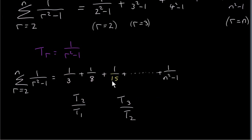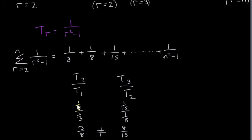To test whether the series is geometric — or rather, to prove it is not — we look at any term divided by the previous term, which gives a common ratio r. This must be the same for every pair of consecutive terms. Taking t2 divided by t1 gives (1/8) divided by (1/3), which is 3/8. Then t3 divided by t2 gives (1/15) divided by (1/8), which is 8/15. Since 3 times 15 equals 45 and 8 times 8 equals 64, and 45 is not equal to 64, the fractions are not equal, so this series is not geometric.